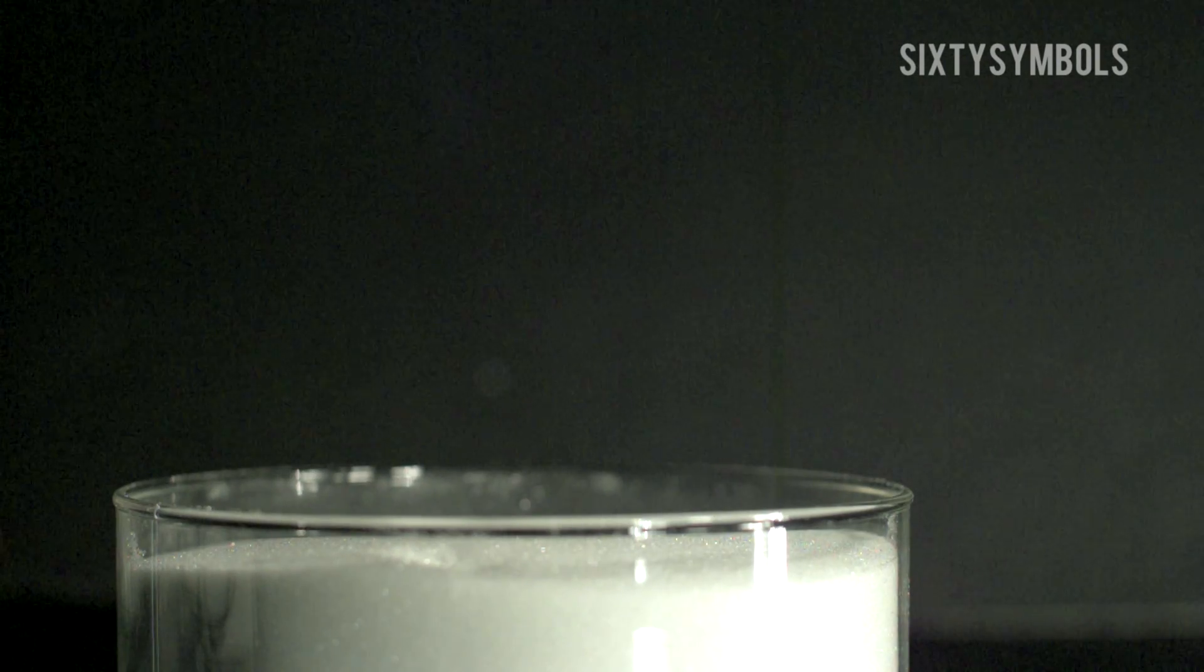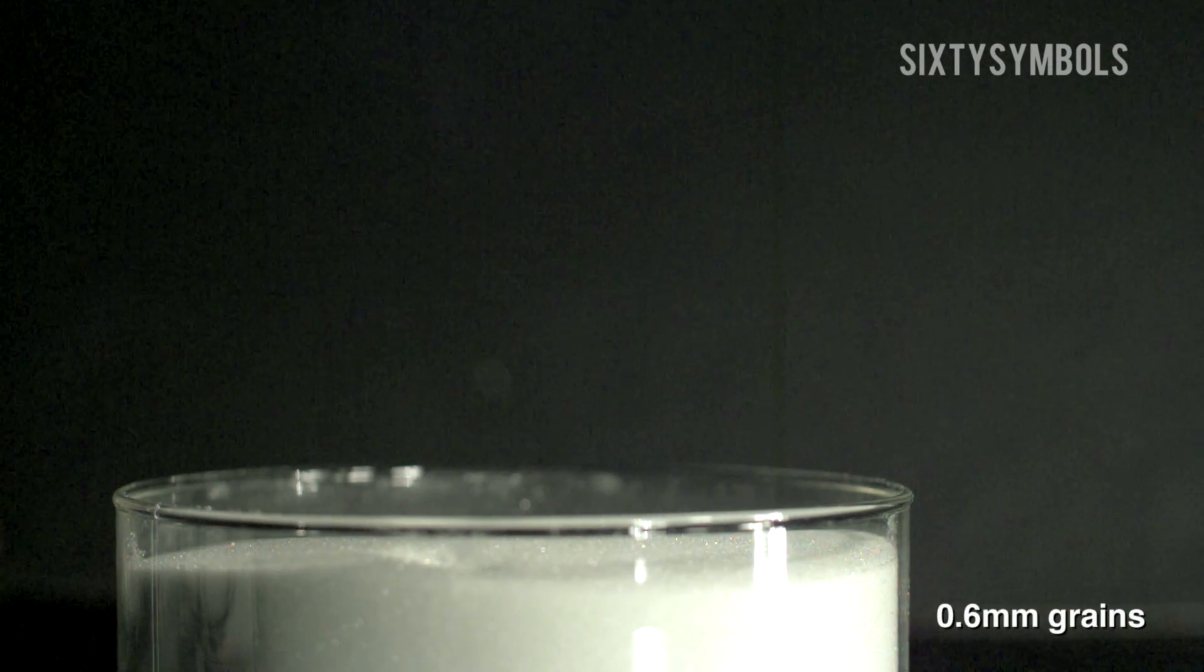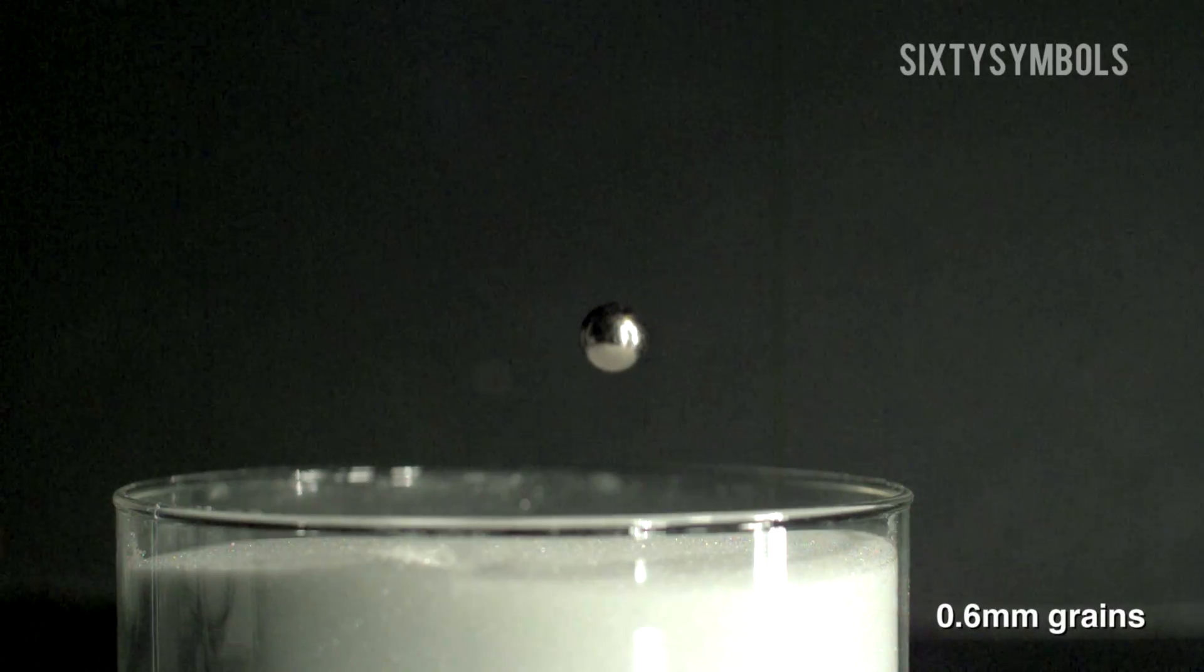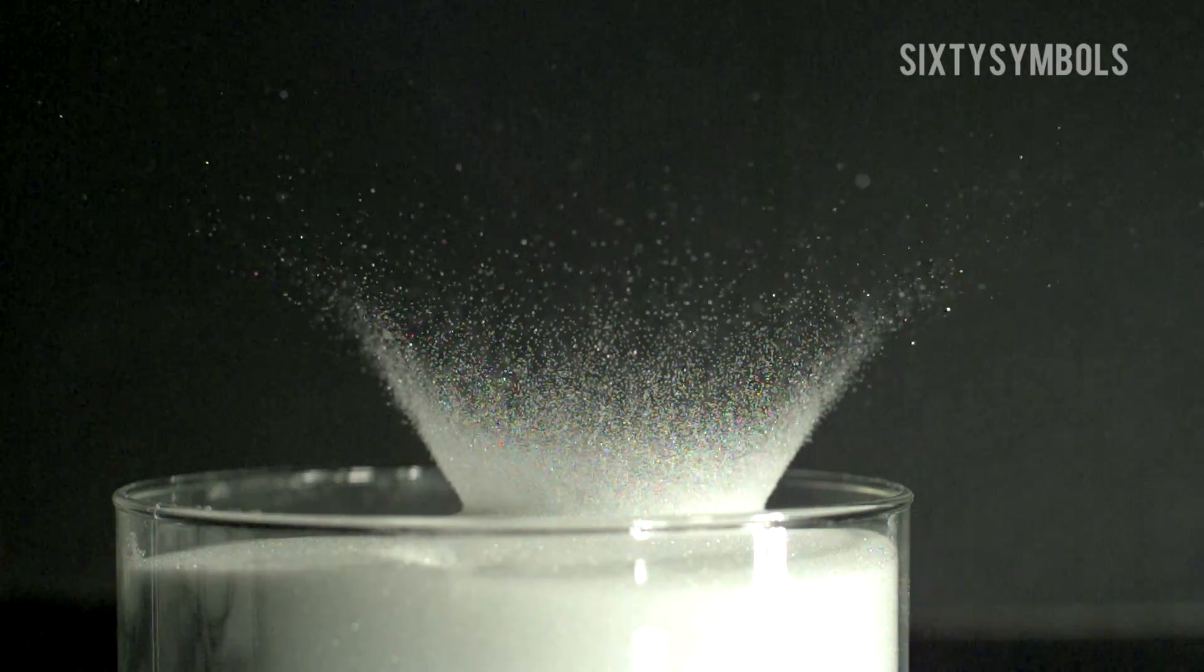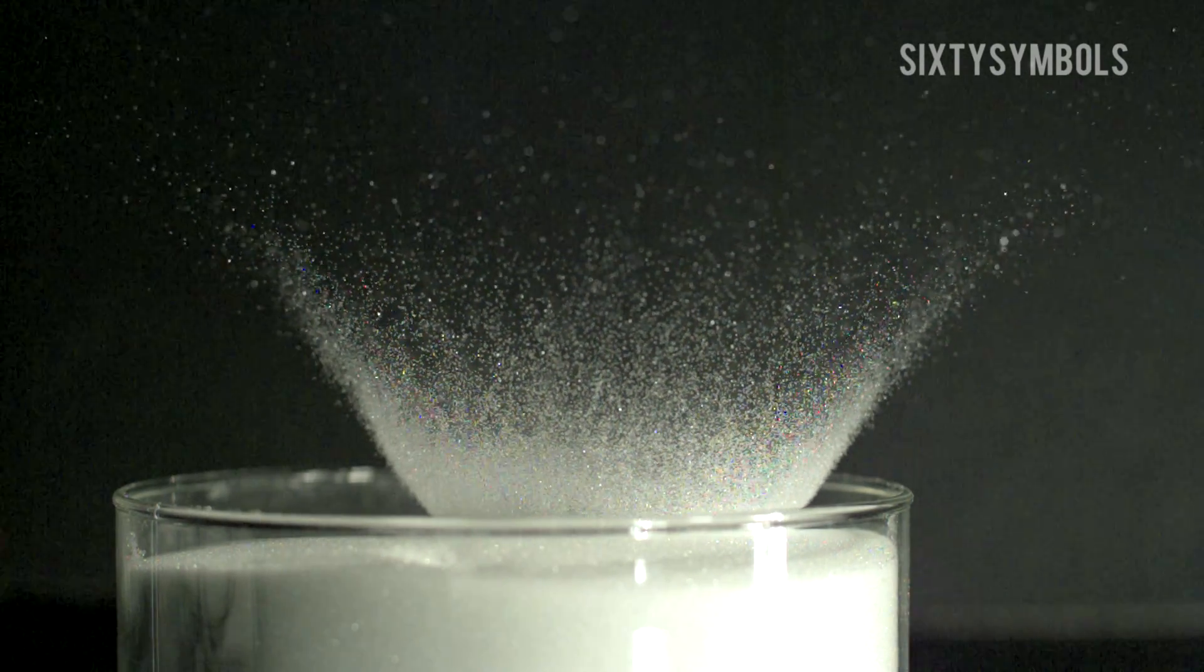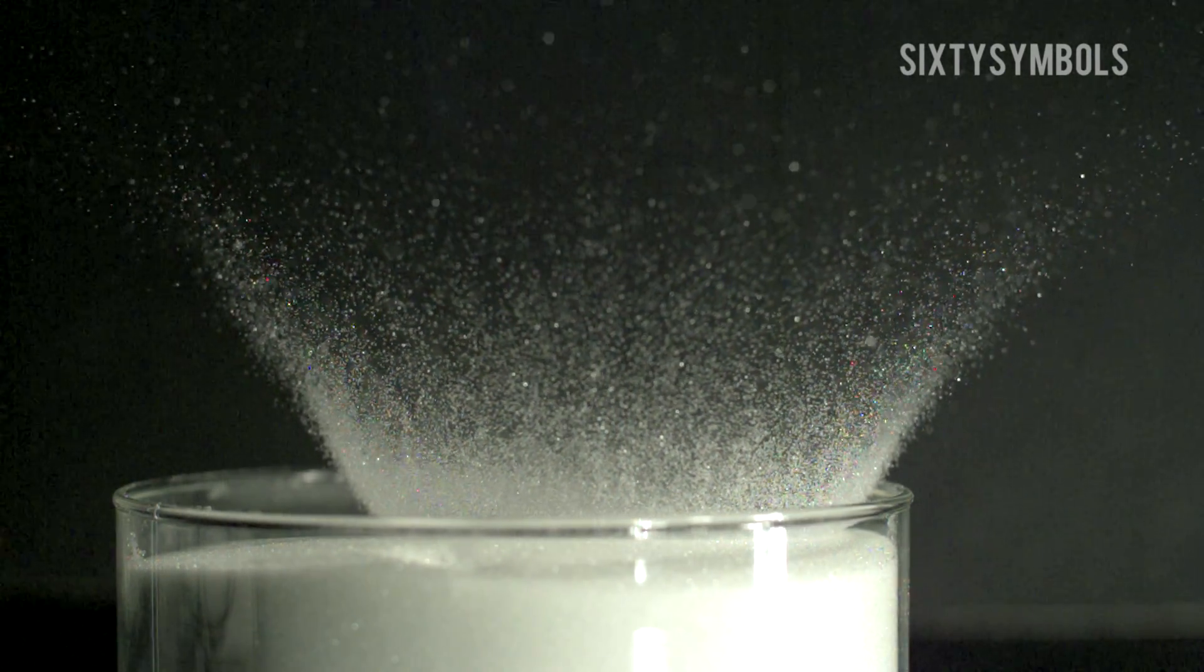Now we repeat the experiment using the bigger beads, 0.6 millimeters. And if the steel ball comes in, you get a corona coming out. But wait for it, there is no plume. Nothing rises up from the center. You just get a normal crater appearing in the glass beads.